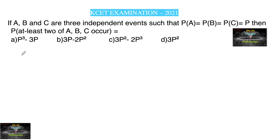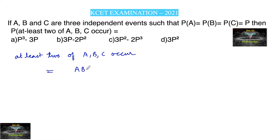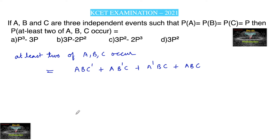At least 2 of A, B, C occurring means: A occurs, B occurs, and C does not occur; or A occurs, B does not occur, and C occurs; or A does not occur, B occurs, and C occurs — these are the cases for exactly 2. And for all three, A, B, and C all occur.